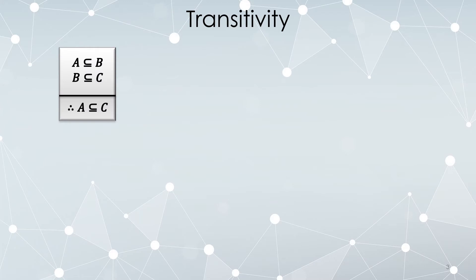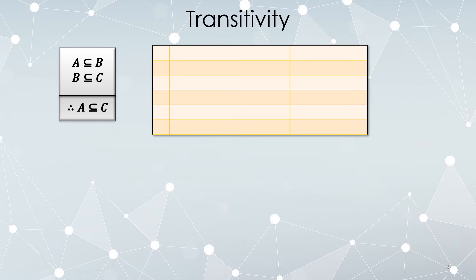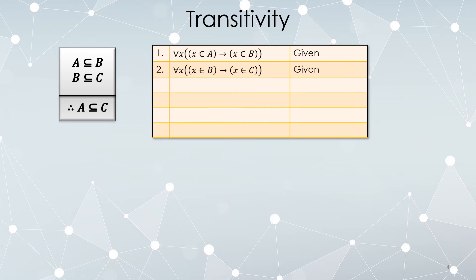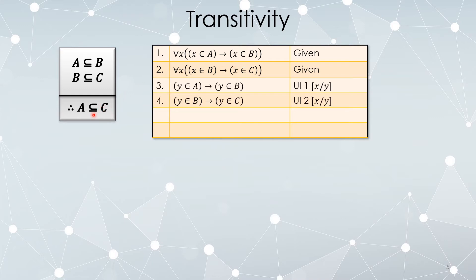For example, we're going to prove the following rule of inference. Here is how we could do it as a two-column proof. We have two givens — A is a subset of B and B is a subset of C — but here they are written as predicate logic statements: anything in the universe, if it is in A then it is in B; anything in the universe, if it is in B then it is in C. Our assertion is that everything in A must be in C.